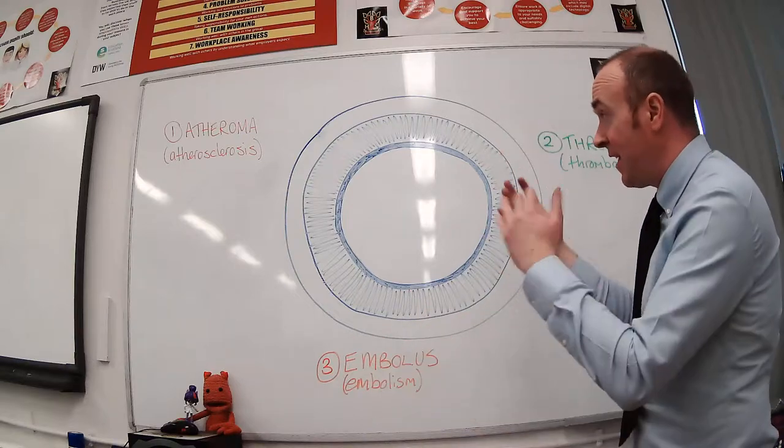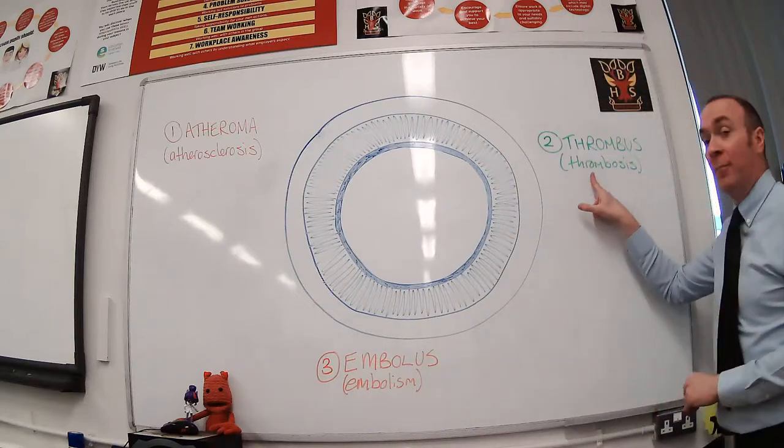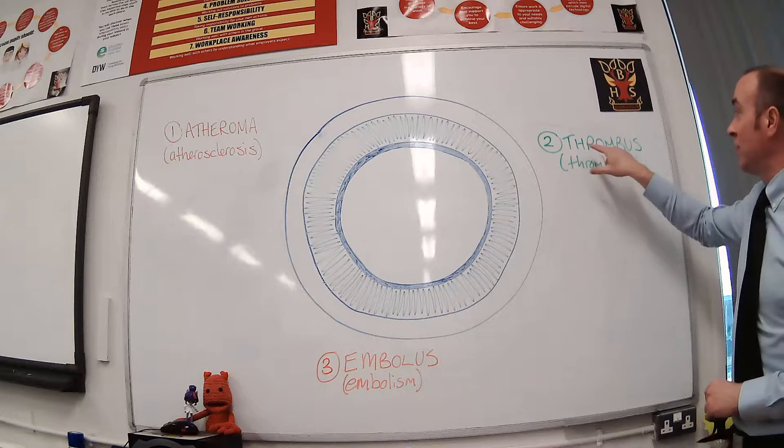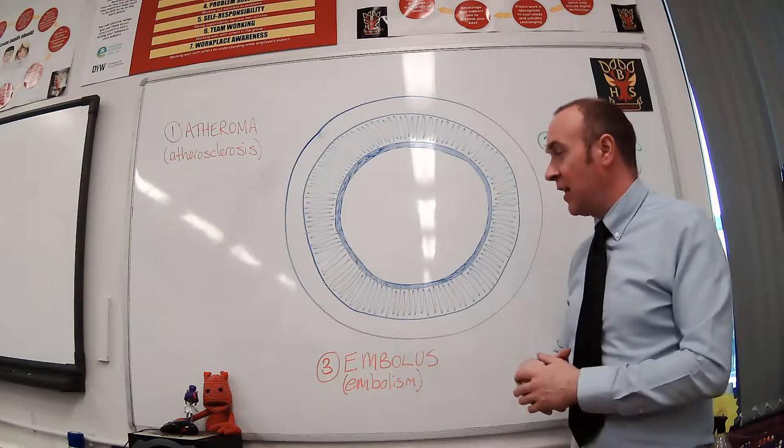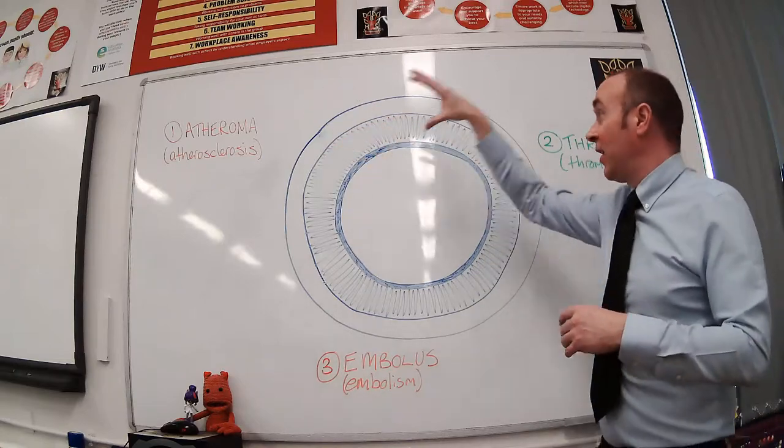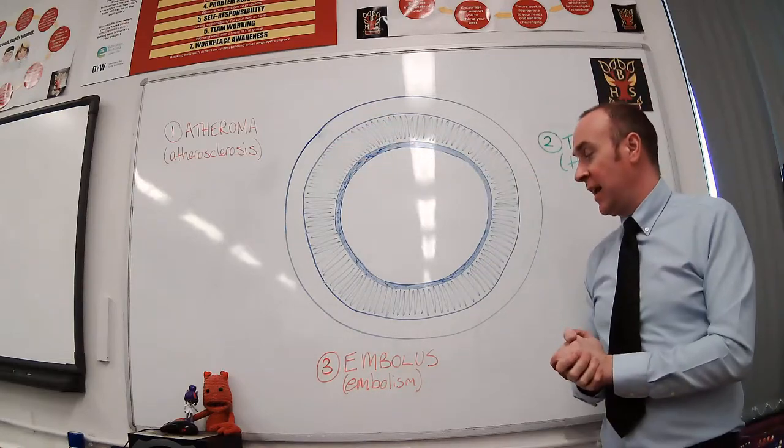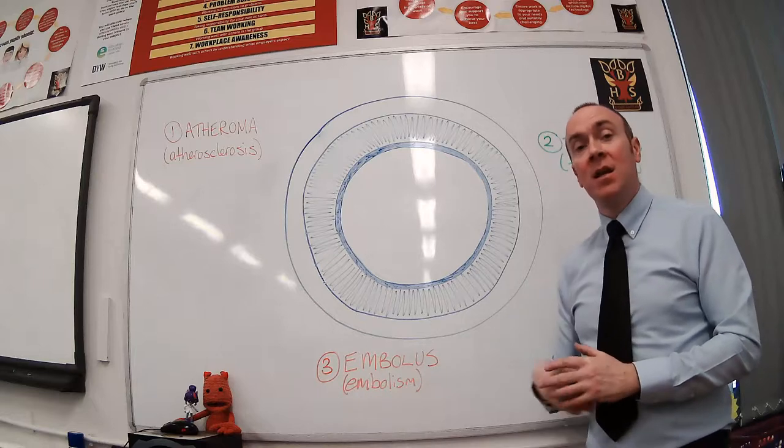I have attempted to try and show that with three different colors. To start with, we're going to deal with this condition here called atherosclerosis, which is basically the formation of something called an atheroma. That can then progress to thrombosis, which is the formation of something called a thrombus. And then the final stage is getting to where we can have something called an embolism occur.